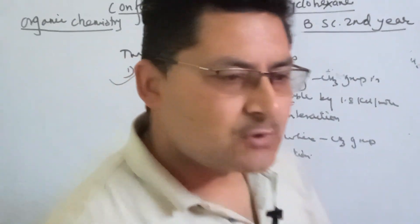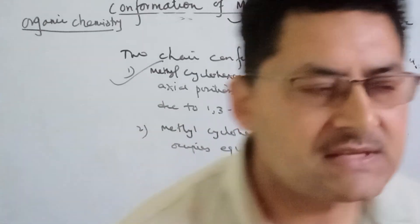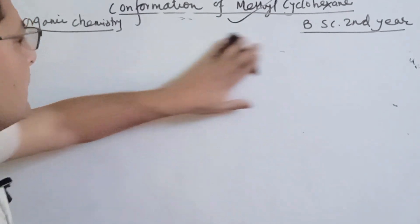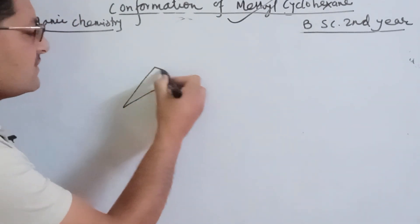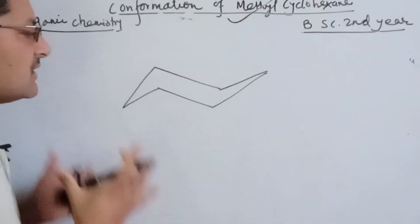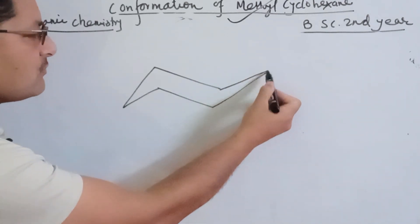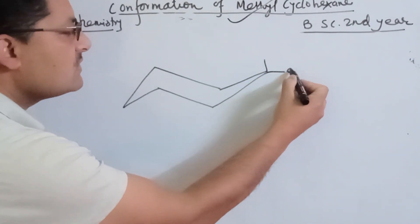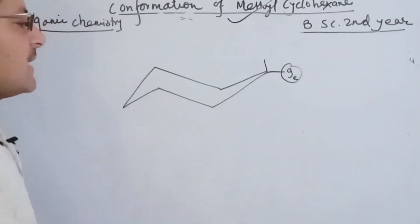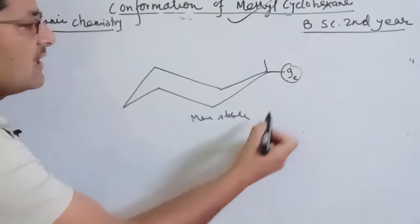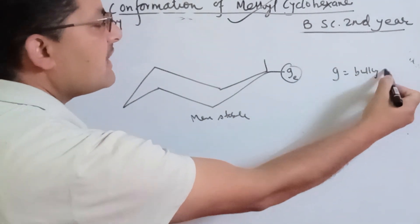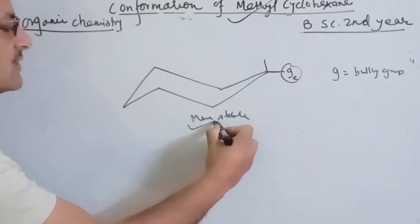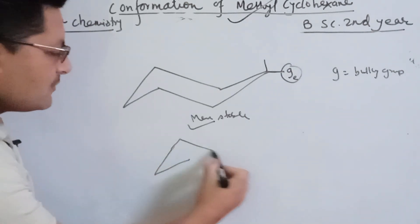We can apply the same concept to other organic compounds. The bulky group is more stable in the equatorial position. Where G is a bulky group, like a methyl group, the group is more stable in the equatorial position.